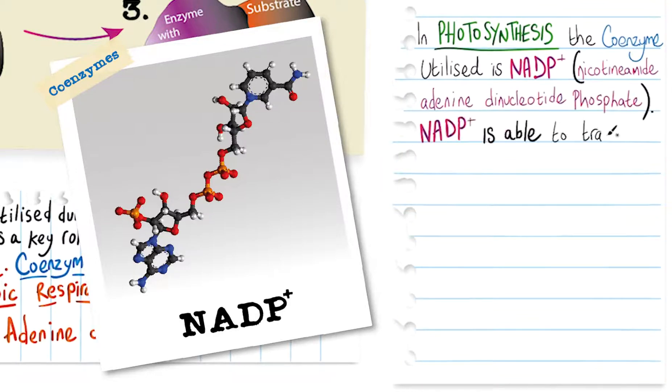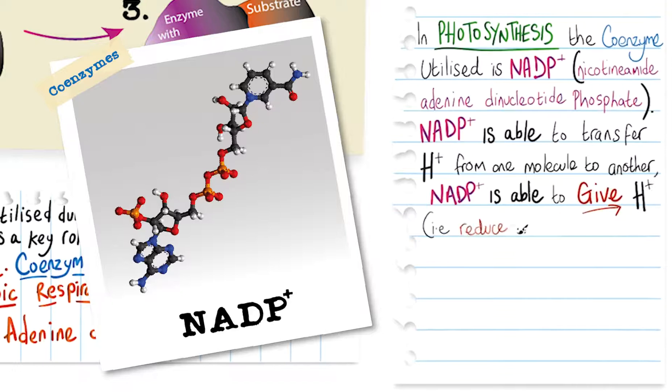NADP is able to transfer hydrogen ions from one molecule to another and is able to give hydrogen ions, i.e. reduce molecules, and accept hydrogen ions, i.e. oxidize molecules.